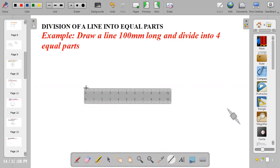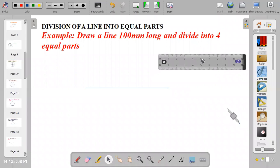The first step is to draw a line 100mm long. There are two points on the line. Name the two points as point A and point B.